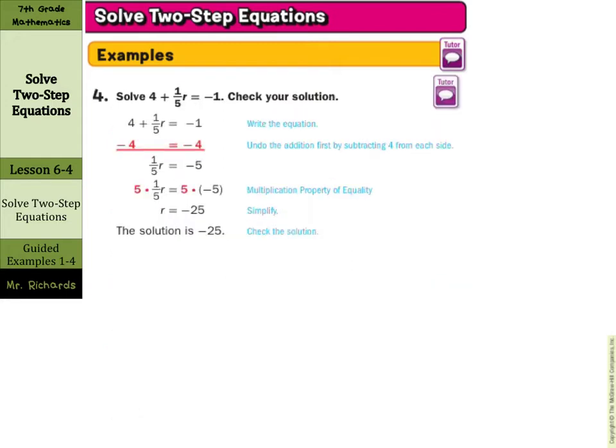In our fourth guided example here, pay attention to where the variable is. One fifth r is on the inside here. We're actually going to still undo the addition first, so we're going to subtract 4 on both sides. Negative 1 minus 4 is negative 5. Multiply by the reciprocal of one fifth, which is just 5 over 1, or 5. You are left with r equals negative 25.